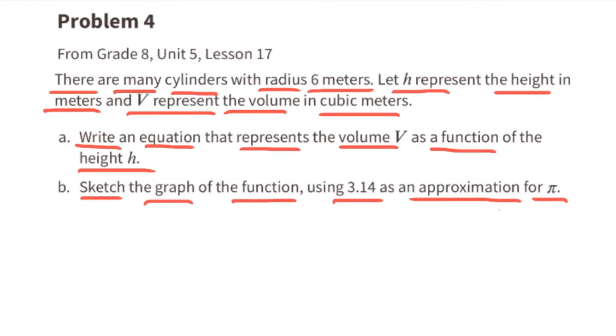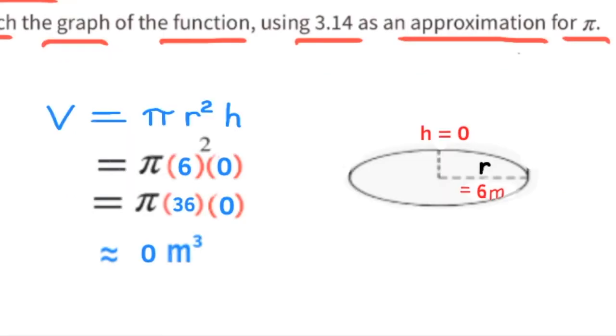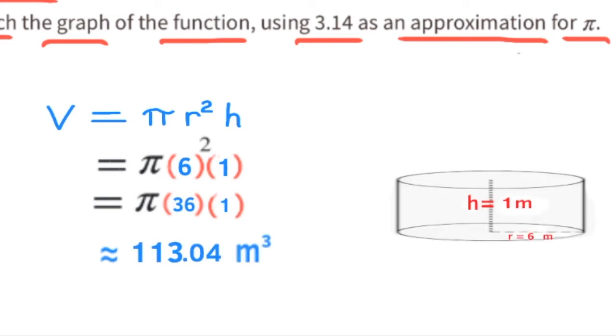Part b: Sketch the graph of the function using 3.14 as an approximation for pi. If the height of the cylinder were 0 meters, then the volume would be 0 meters cubed, and we can show that point on the graph. If the height of the cylinder were 1 meter, then the volume would be 113.04 meters cubed, because 3.14 times 36 times 1 is 113.04. I'll show that point on the graph as well.